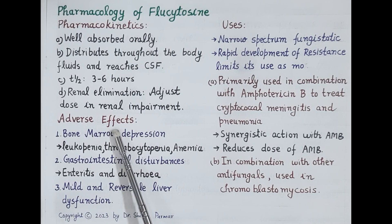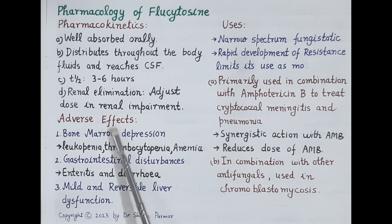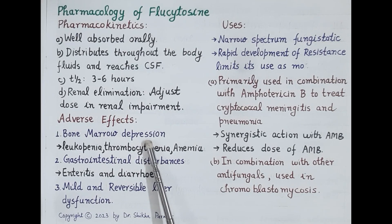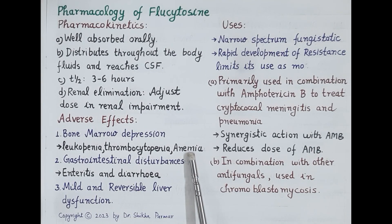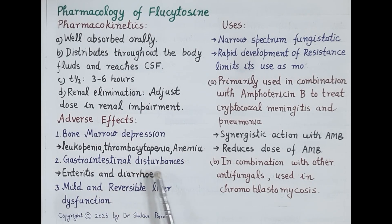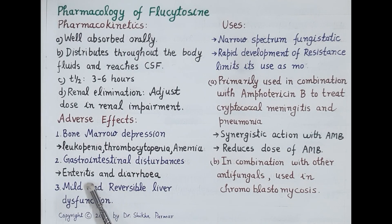Now let's understand the adverse effects of flucytosine. Although cytosine deaminase, which converts inactive flucytosine to active 5-fluorouracil, is absent in human beings, human bone marrow cells can convert flucytosine to 5-fluorouracil. This causes bone marrow depression manifested as leukopenia, thrombocytopenia, and anemia. Additionally, intestinal microbial flora is believed to convert flucytosine to 5-fluorouracil, resulting in gastrointestinal disturbances like gastroenteritis and diarrhea.